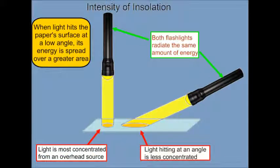The intensity of insolation varies with the angle of the sun overhead in the sky. This is illustrated using a flashlight and a piece of paper. In this diagram, both flashlights radiate the same amount of energy, but the light from the overhead flashlight is more concentrated, and you can see that small disk of light where the flashlight is striking the paper.